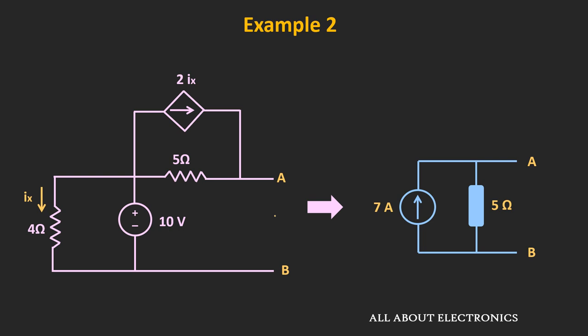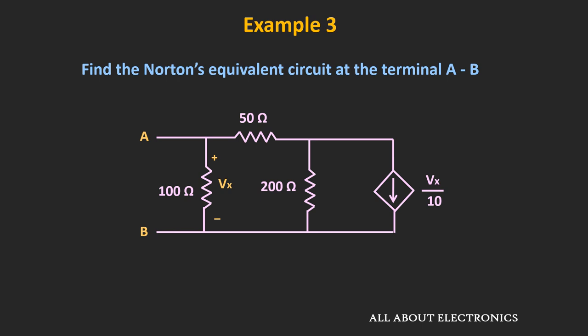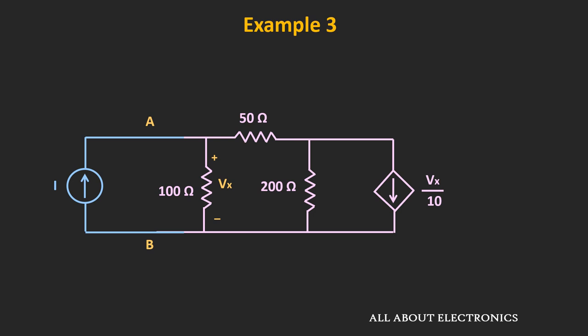Now let's see the third example where the circuit contains only dependent sources. When there is no independent source in the circuit, the Norton's equivalent current and Thevenin's equivalent voltage are both zero. However, we can find the equivalent impedance by applying either a test current or a test voltage between the two terminals. If we apply a test current, we find the voltage across it; the ratio gives the equivalent resistance. Similarly, if we apply a test voltage, we find the current through the source; again the ratio gives the equivalent resistance.